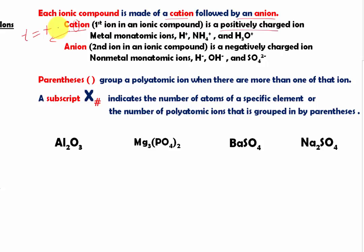What are the common cations? The metal monatomic ions on the periodic table, including hydrogen that has lost electrons, are cations. For polyatomic ions, we have two: ammonium and hydronium. In order to identify them, you need to know what they are and what they look like.